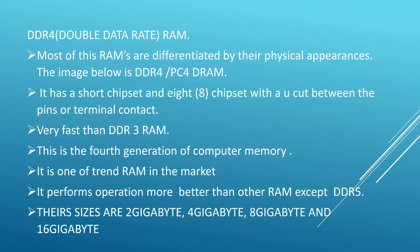DDR4 is a double data rate RAM. Most of these RAMs are differentiated by their physical appearances. It is also known as PC4 dynamic RAM. It has a short chipset and eight chipsets with a U-notch between the pins or terminal contacts. It is very fast — faster than DDR3 RAM. This is the fourth generation of computer memory and one of the trending RAMs in the market. It performs better than all other RAMs except DDR5. Their sizes are two gigabytes, four gigabytes, eight gigabytes, and 16 gigabytes.